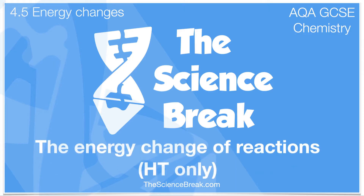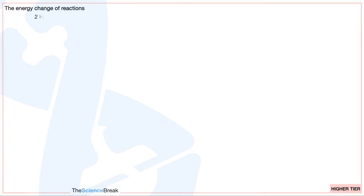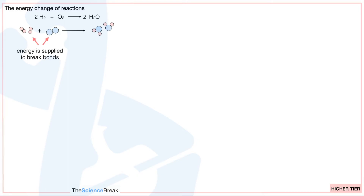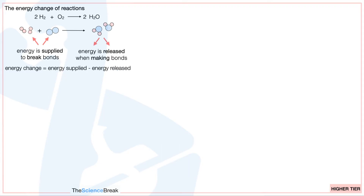The energy change of reactions — this is for the higher tier only. Let's take an example of the reaction of hydrogen with oxygen to form water. We can see two molecules of hydrogen react with one molecule of oxygen to produce two molecules of water. We need to remember that energy is supplied to break the bonds in hydrogen and oxygen, and energy is released when making bonds to produce the water molecules. The overall energy change is the energy supplied to break bonds minus the energy released when making bonds.